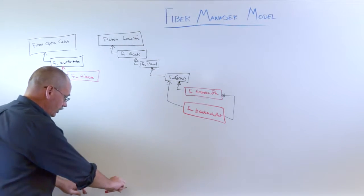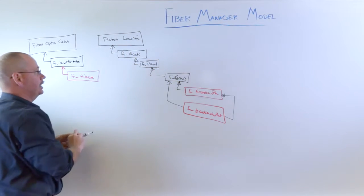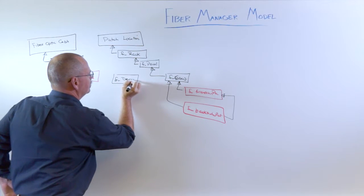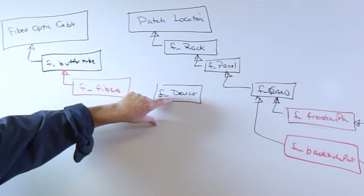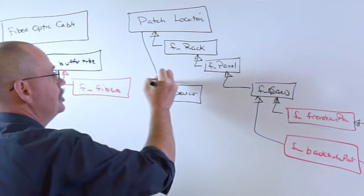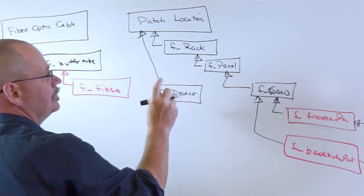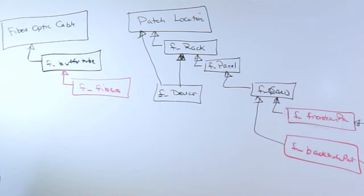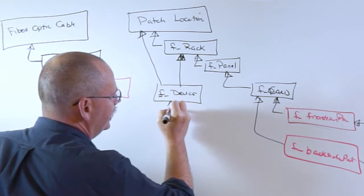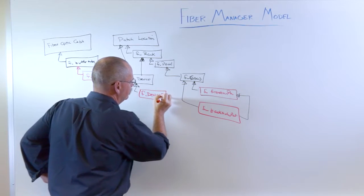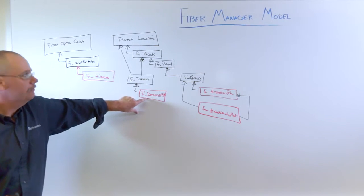There is another object that is inside the patch location and that is the device, F underscore device. A device is where you're getting a transistor between your optical signal and your analog or something's happening to that signal. There's a relationship between the patch location. So you can put the device inside the patch location or you can put it inside the rack. The child of a device is F underscore device port.